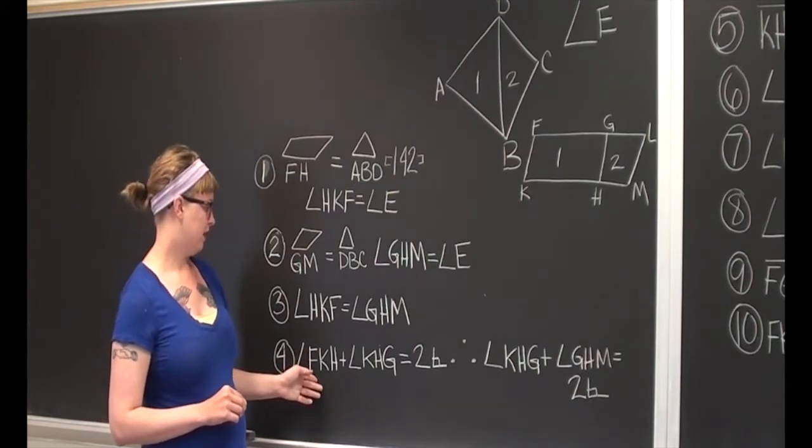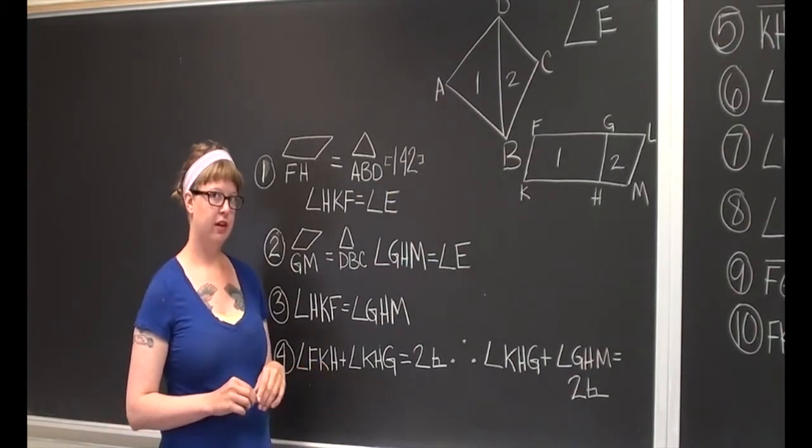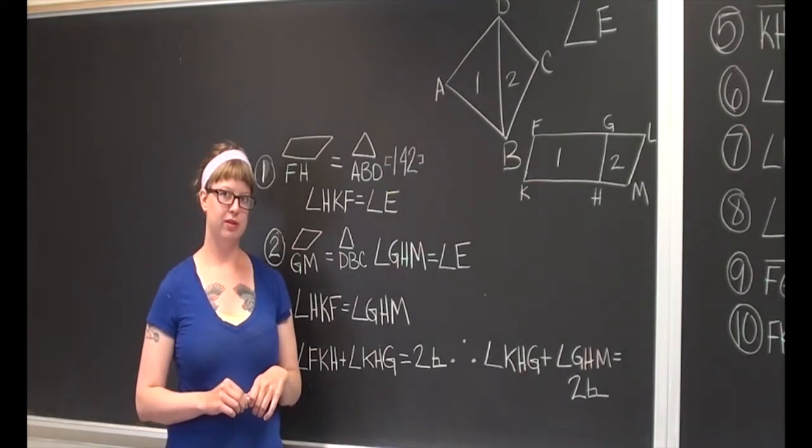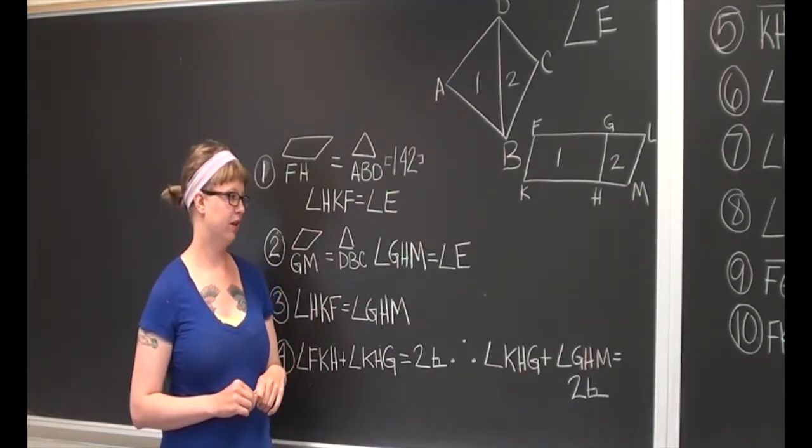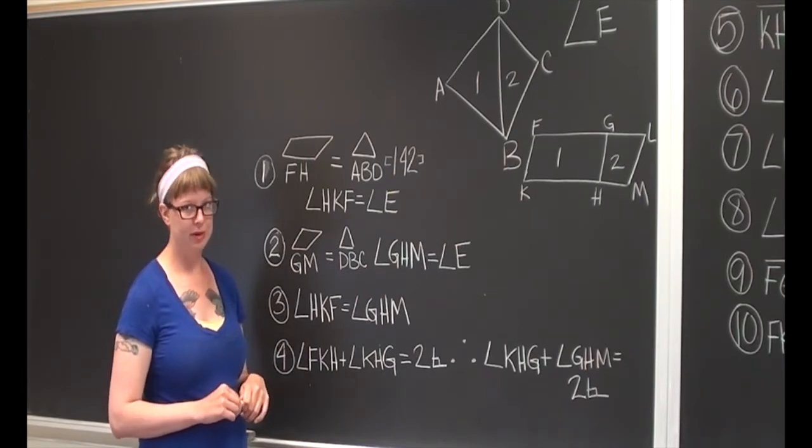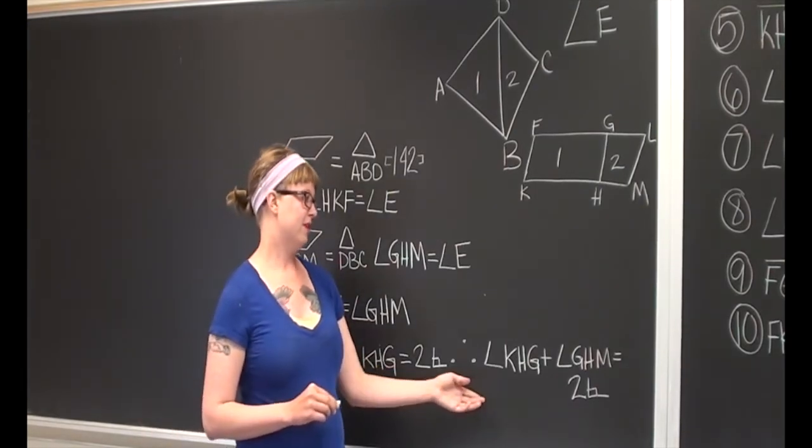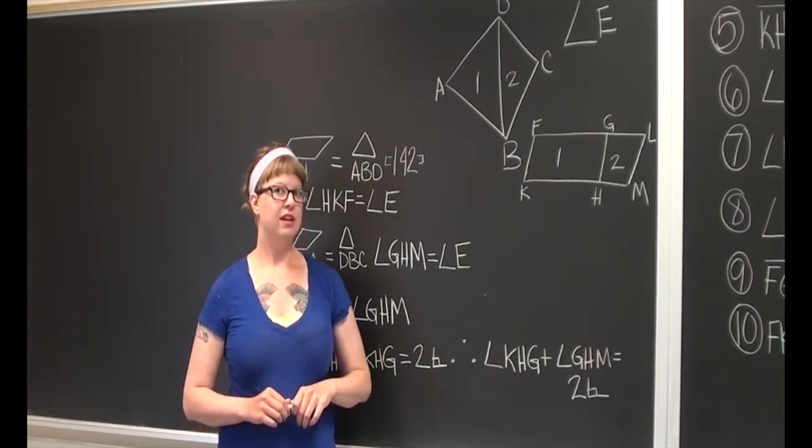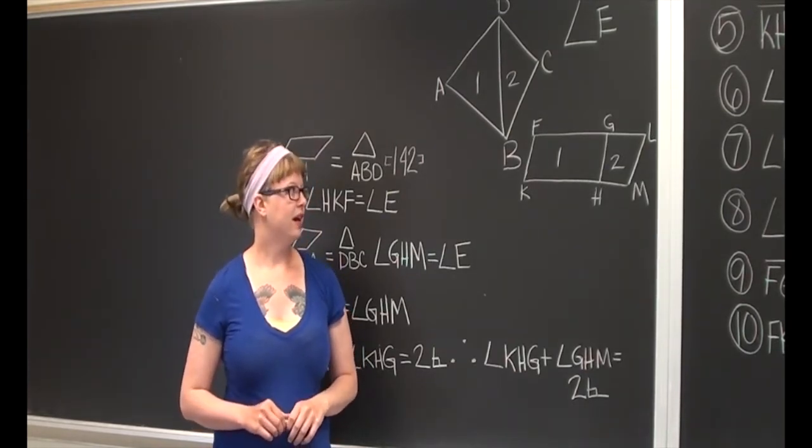Next, we'll note that FKH plus KHG is equal to two right angles. And for the same reason, we know that KHG plus GHM is equal to two right angles.